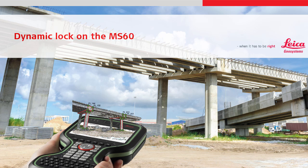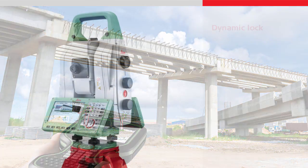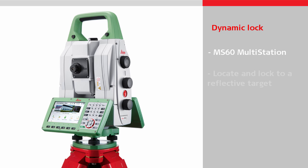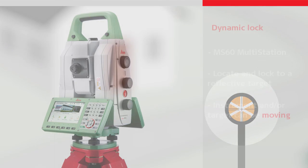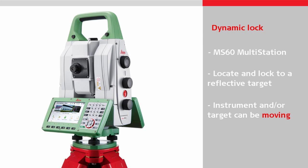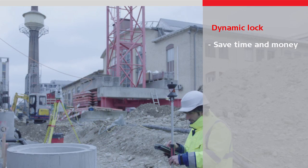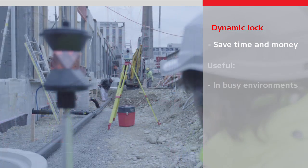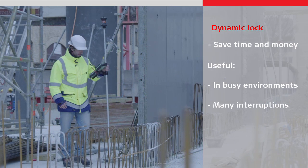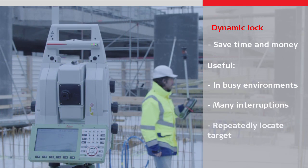This video will give an overview of the dynamic lock functionality found on MS60 multistations. Dynamic lock enables the MS60 to rapidly locate and lock onto a reflective target, even if the instrument and/or target is moving. Being able to lock to a target while still moving can save an enormous amount of time and money. It can be particularly useful when working in busy environments where there are many interruptions in the line of sight to the target and the target needs to be repeatedly and quickly located.